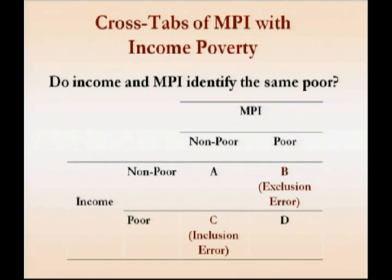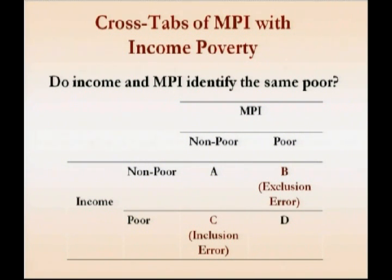There was also discussion about whether we can go beyond comparisons, because even if the head counts for income and MPI poverty were the same, there's a further question: are they identifying the same people as being poor — income poor and MPI poor? We were curious whether some people are poor by one measure but non-poor by another, which would create an exclusion or inclusion type 1 or type 2 error if you use the other indicator as a targeting mechanism. Whereas if there was complete overlap, you could use the easiest measure for targeting.